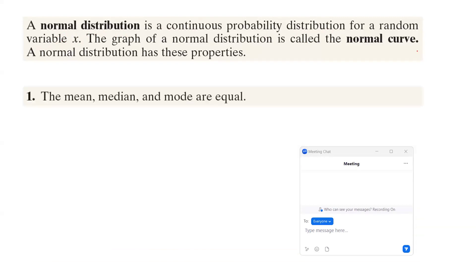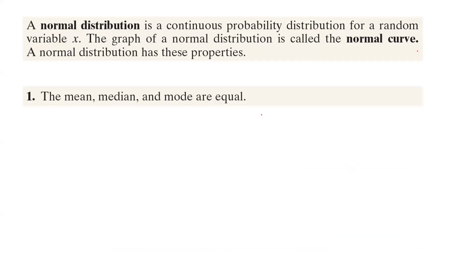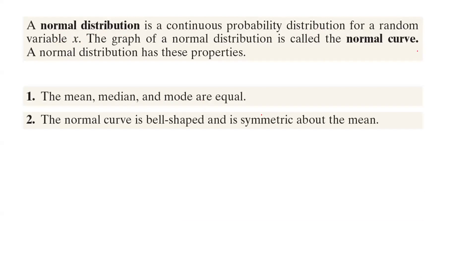A normal distribution has the following properties. First of all, the mean, mode, and median are basically the same. The normal curve is bell-shaped and it is symmetric about the mean.